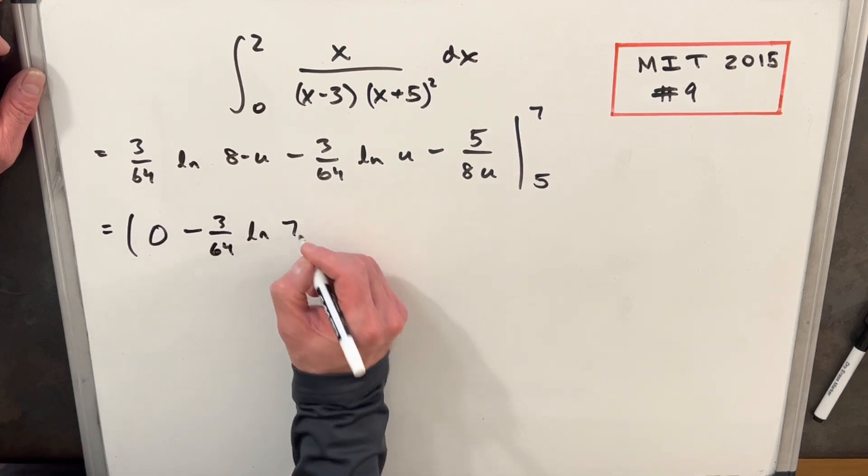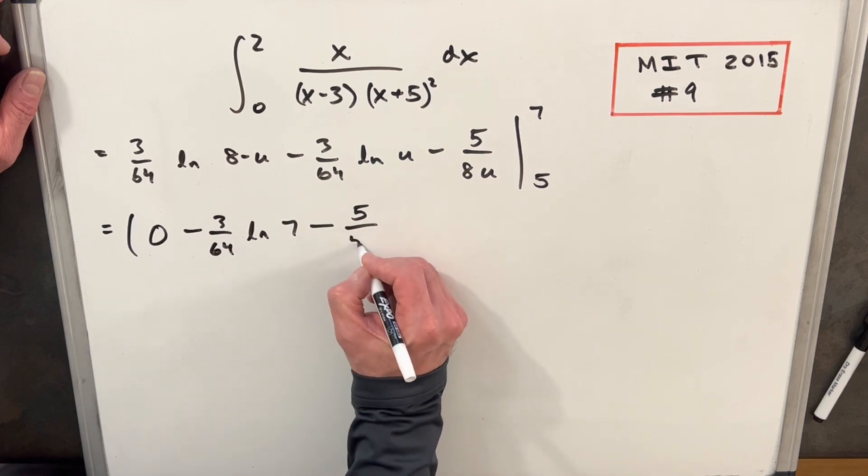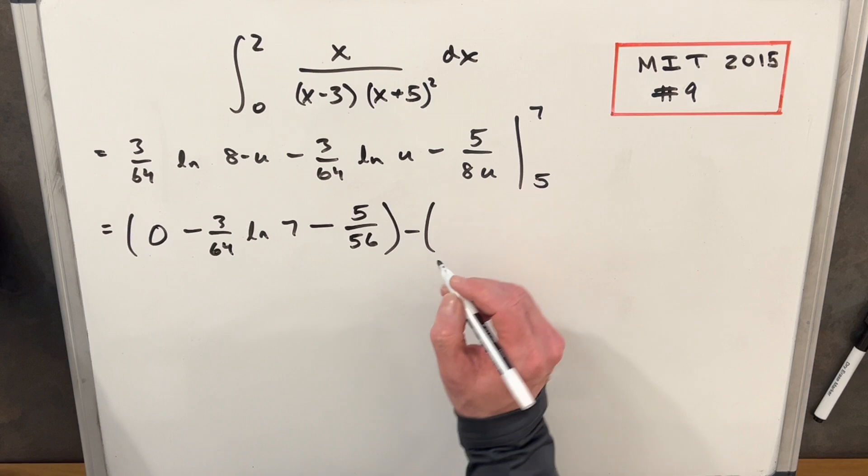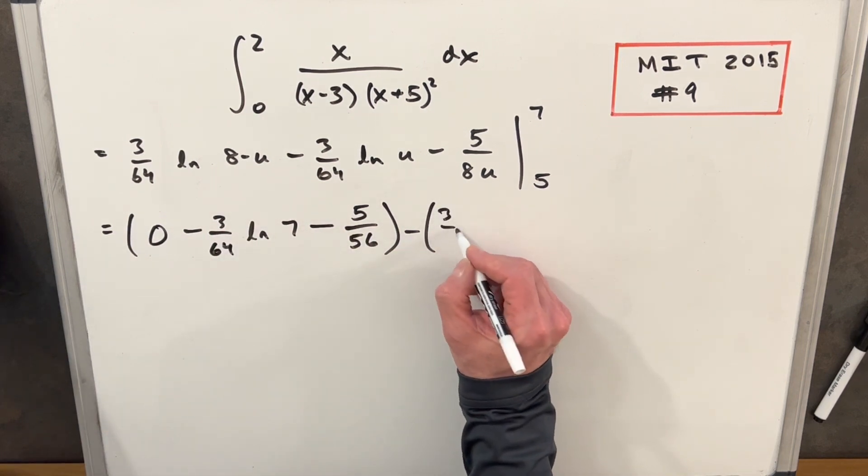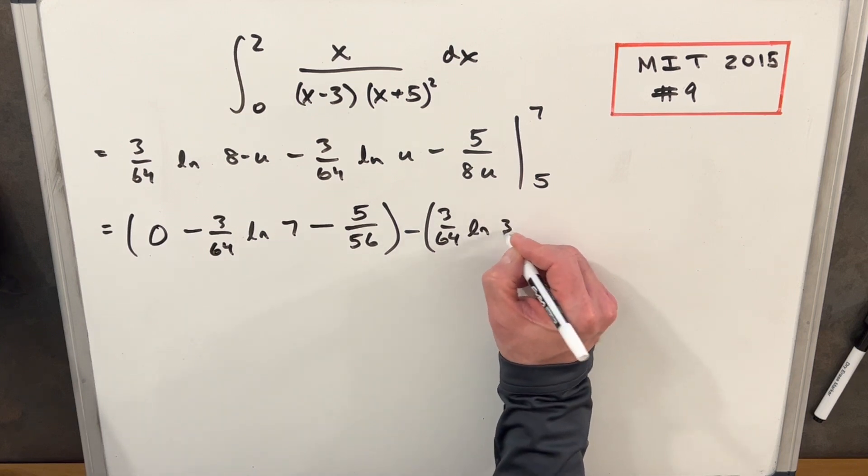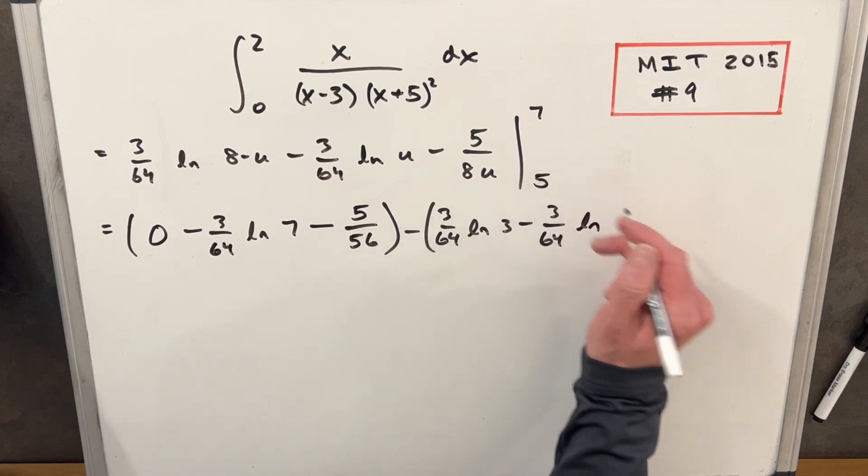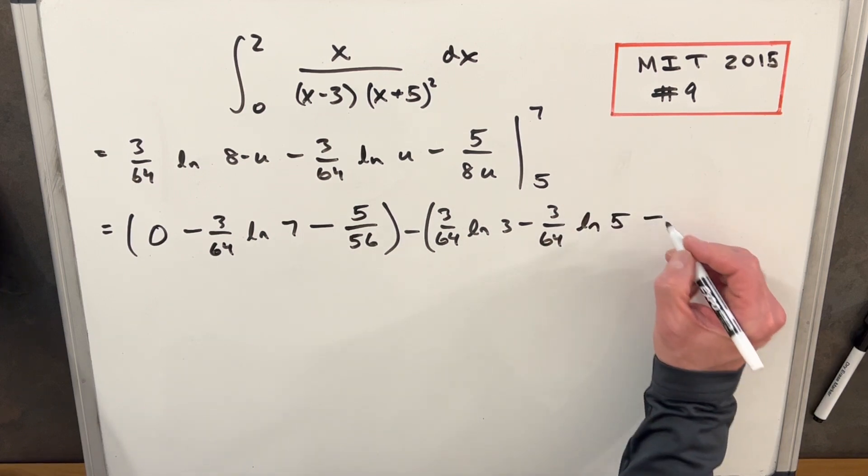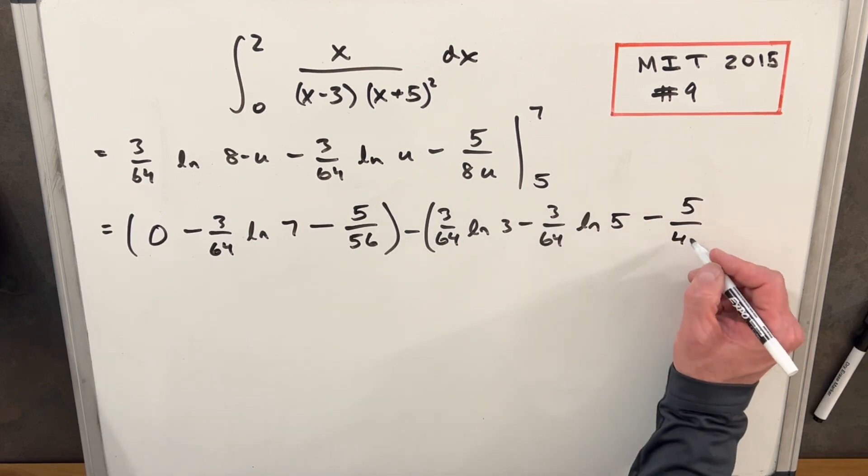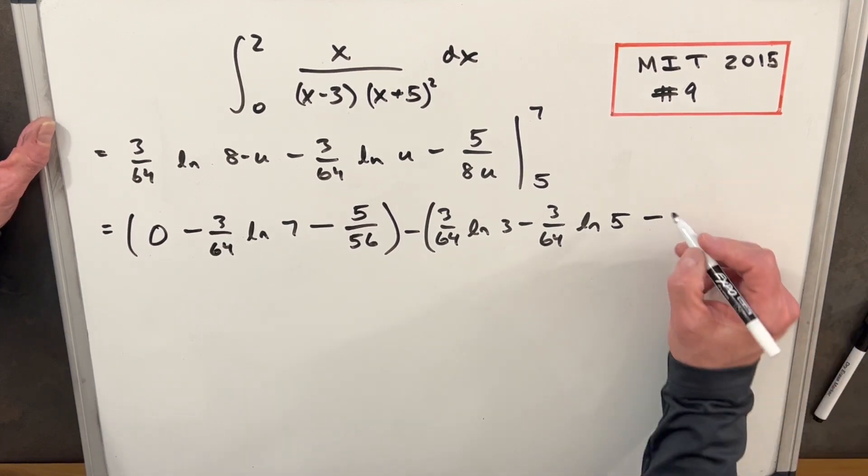Then we're going to go next to our minus three over 64 natural log at seven. It's just going to be an ln of seven. Then minus five over eight times seven, five over 56. Then we'll have a minus sign in between. We're going to plug in our five. So we're going to have three over 64, eight minus five natural log of three minus three over 64 natural log of our five. Then we're going to have minus five over eight times five is 40. Let's just cancel the five and we're going to have here a one over eight.